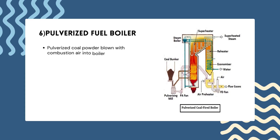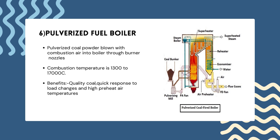In a pulverized fuel boiler, pulverized coal powder is blown with combustion air into the boiler through burner nozzles. Its combustion temperature is 1,300 to 1,700 degrees Celsius. These boilers are commonly used in large power plants due to their high efficiency and ability to generate large quantities of steam or electricity. Environmental regulations have led to development of cleaner technologies such as fluidized bed combustion and integrated gasification combined cycle (IGCC) systems.